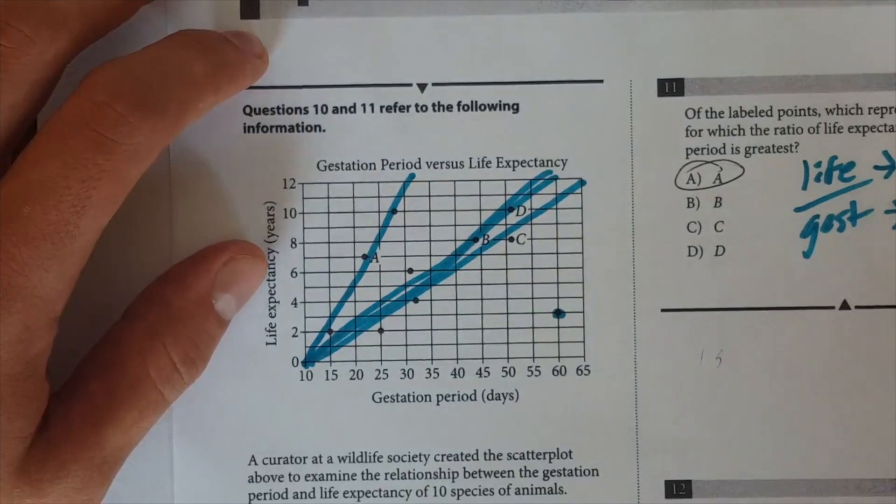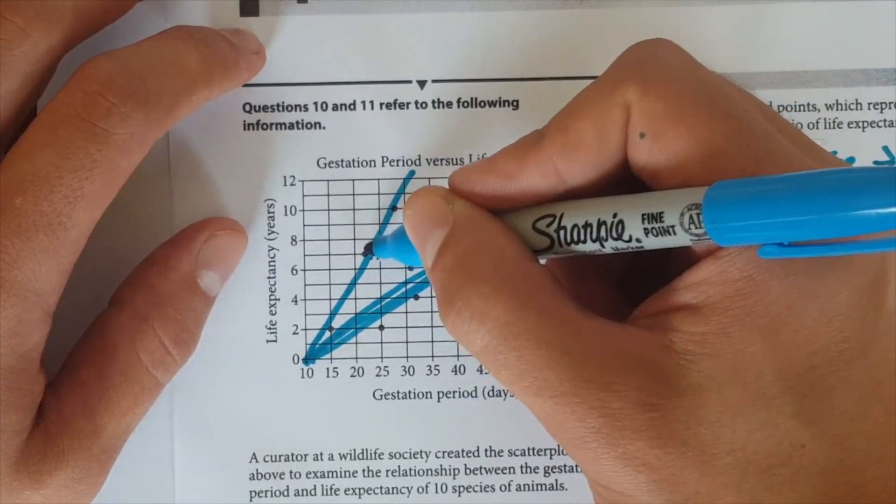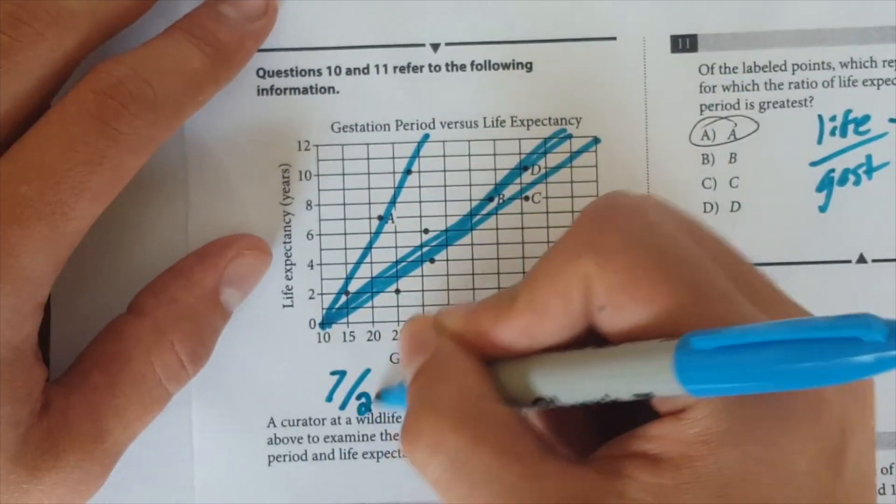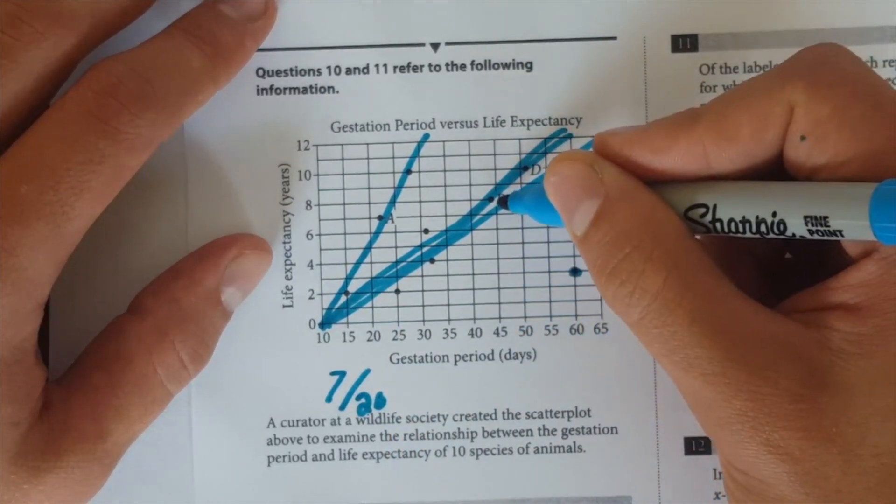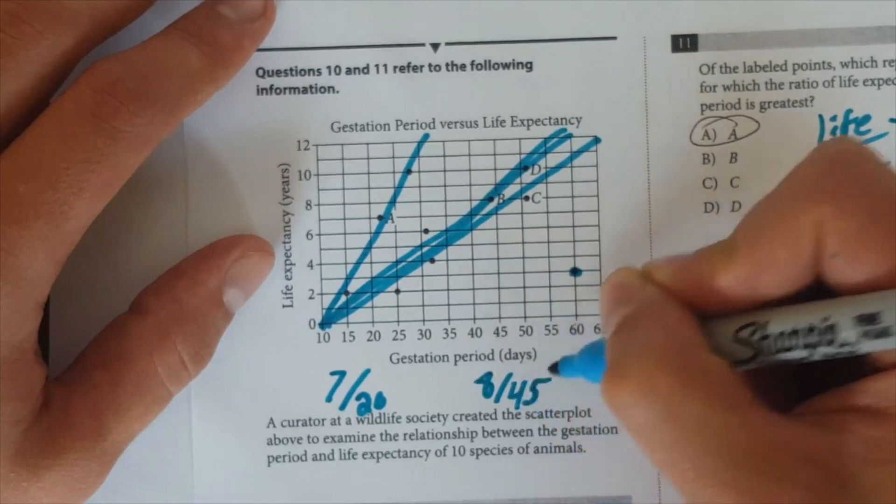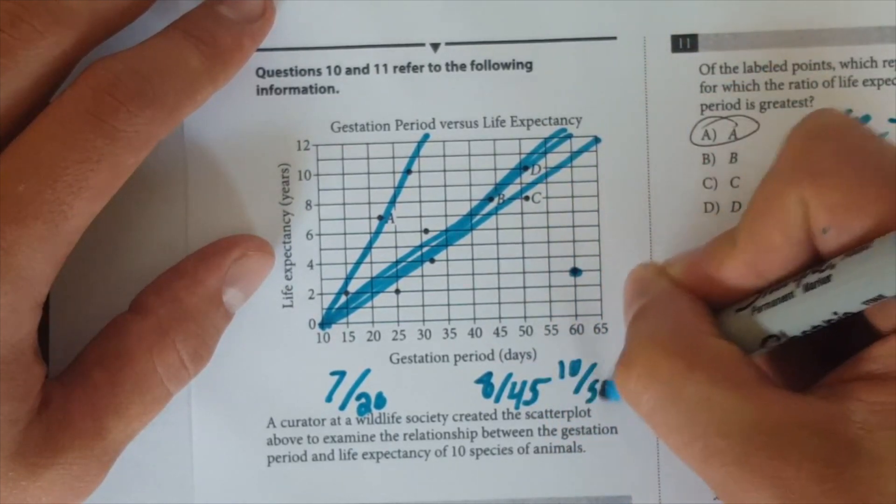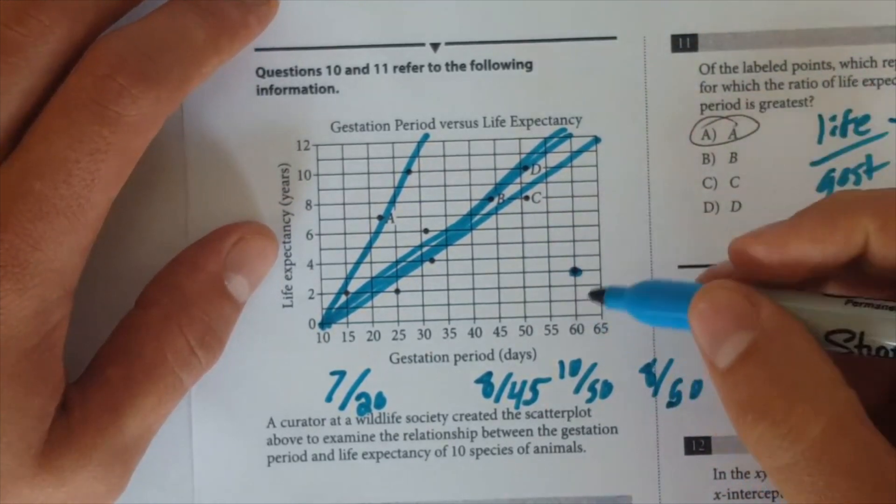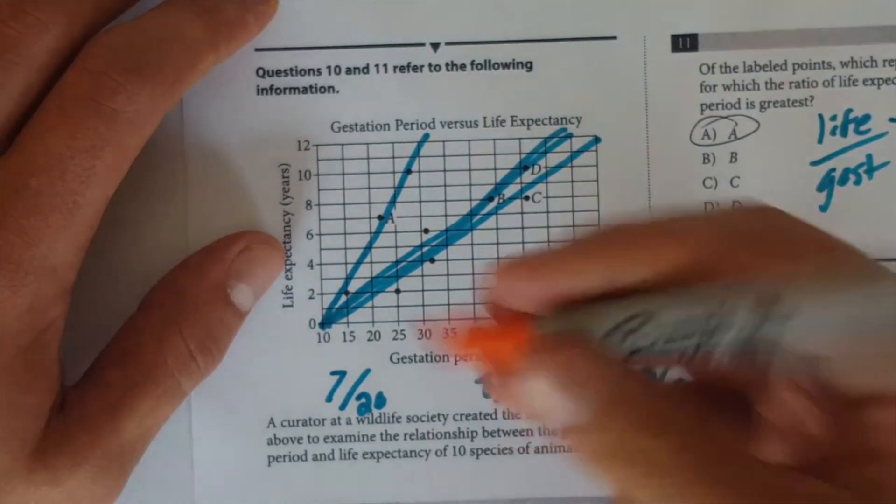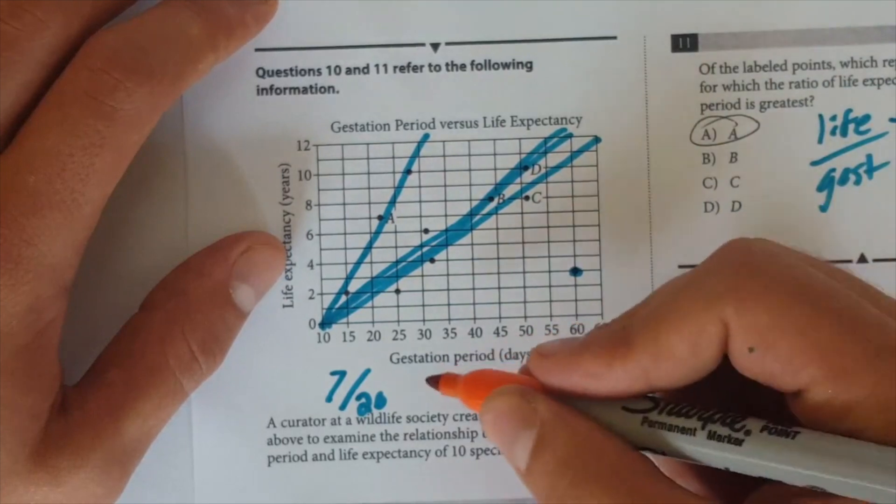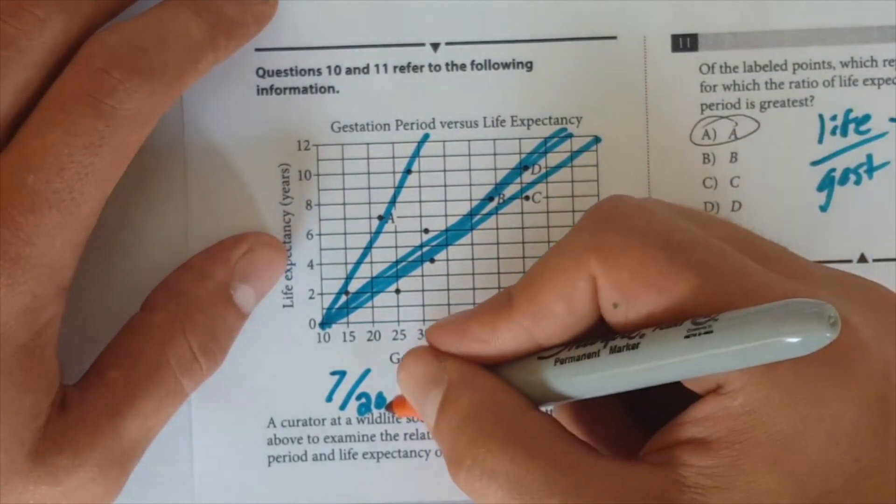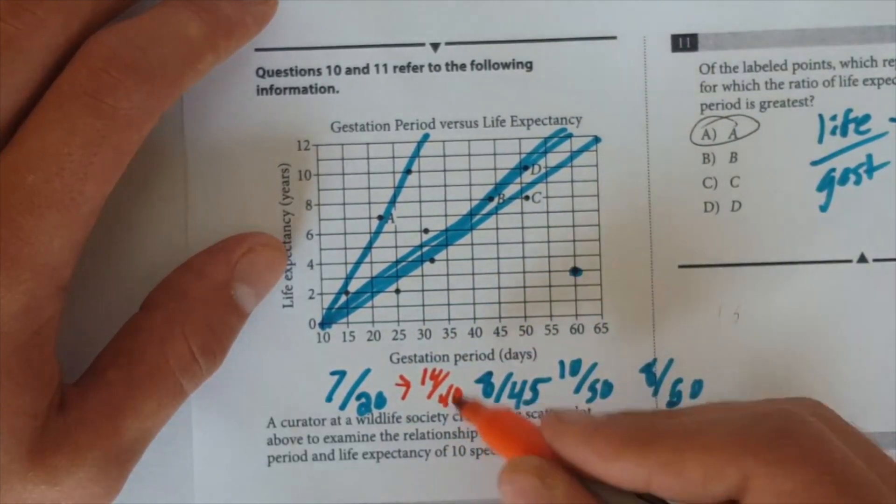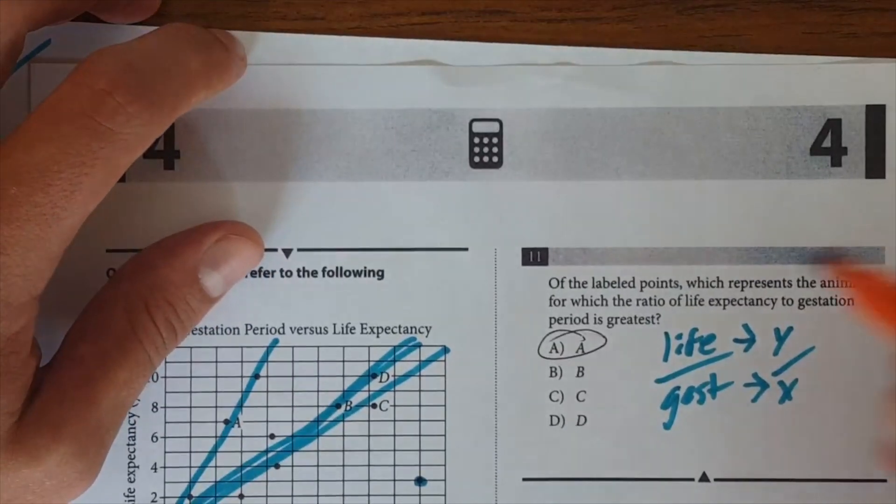You could calculate this rigorously and say, okay, A, that life expectancy would be 7 divided by gestation period, which is about 20, all right, versus, you know, say for example, B, you're going to have 8 divided by 45, D would be about 10 divided by 50, C would be about 8 divided by 50, okay? So even if we just look roughly here, and you can calculate this in just whatever decimals the greatest is going to be the answer, which is A, but you can just look at this roughly with fractions and say, well, 7 divided by 20, that's the same thing as 14 divided by 40, and these numbers are all about the same, and 14 is the biggest, which means that it's the greatest ratio. So, again, the answer is A.